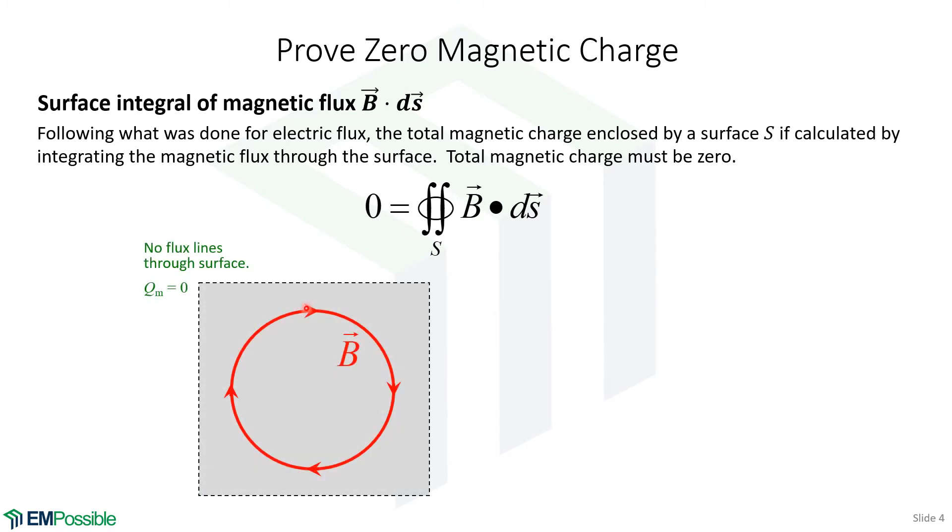Here we have a magnetic field forming a loop and we have formed our Gaussian surface well outside of that. So the magnetic field does not penetrate that surface at all. So there is zero flux all the way around. And then the total integral would be zero. That makes sense.